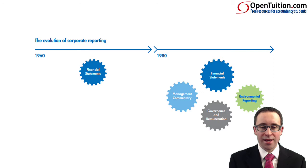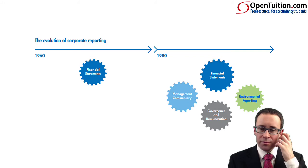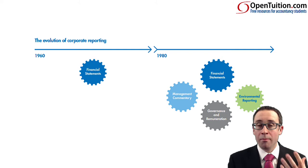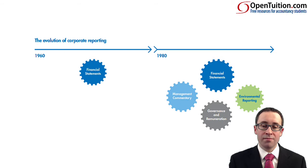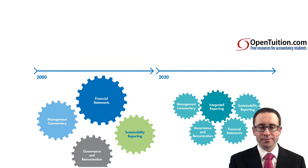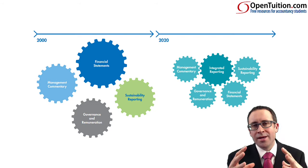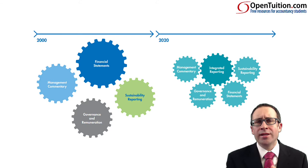Back in the 1960s we just had financial statements — all very much numerical, focused on the financial position and performance. As time evolved, investors and stakeholders wanted to know more, so we started introducing environmental reporting, management commentaries, and then reports on governance, board structure, and director remuneration — checking they were being paid appropriately for the performance being delivered. As time further evolved there was a much bigger focus on each of those four aspects individually, but there's never really been one cog to pull it all together. That's what integrated reporting is trying to do.